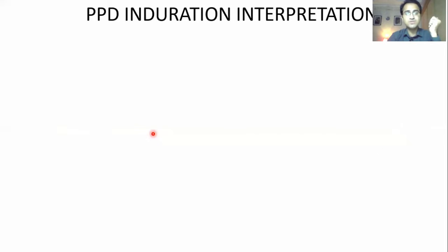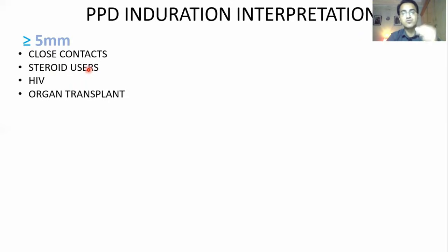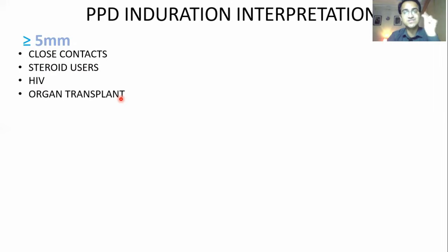We classify patients into three groups. Patients who have an induration greater than or equal to 5 millimeters will be considered positive if they are close contacts — people caring for TB patients — steroid users whose immune system is suppressed, HIV-positive or immunosuppressed patients, or patients having organ transplants taking immunosuppressants. These patients are high risk and immunosuppressed and cannot mount a bigger induration, so a 5 mm induration is considered positive.